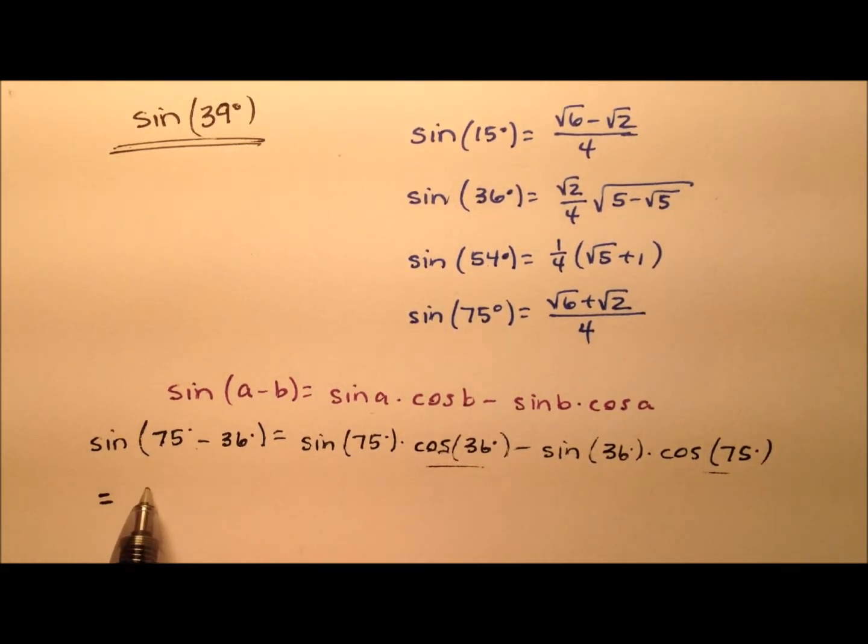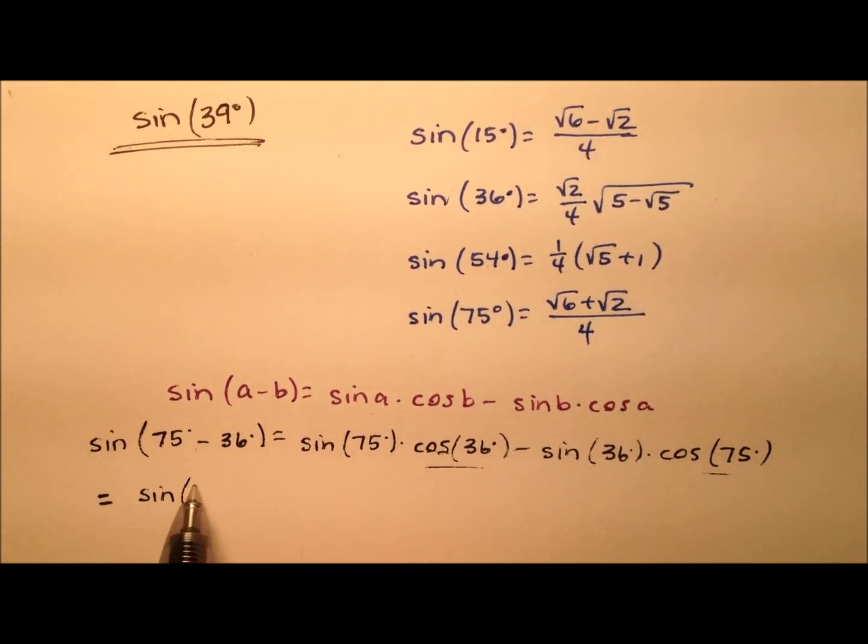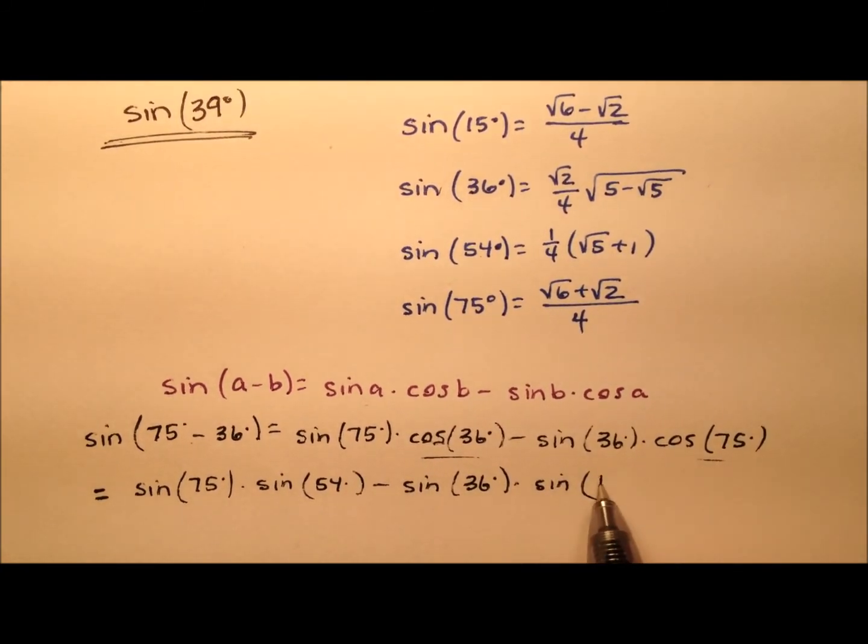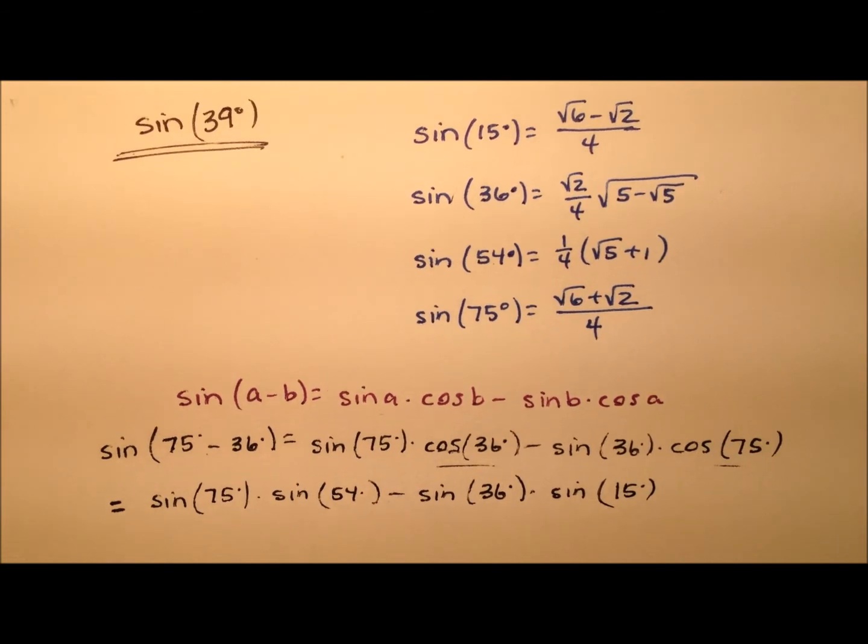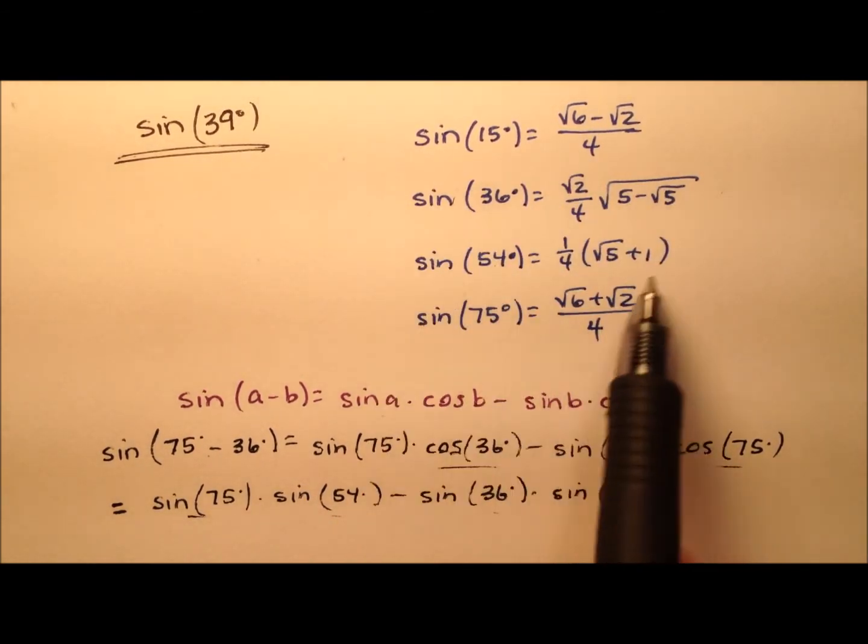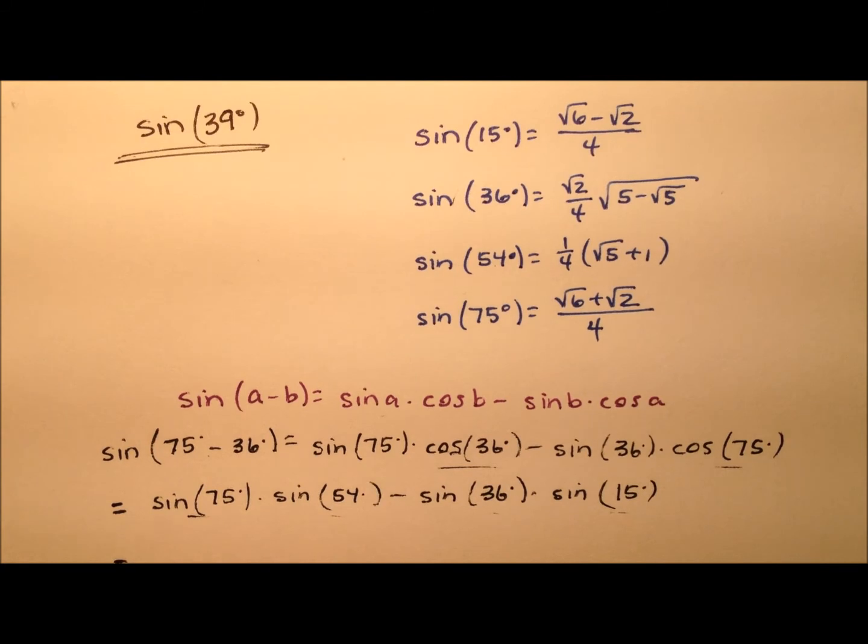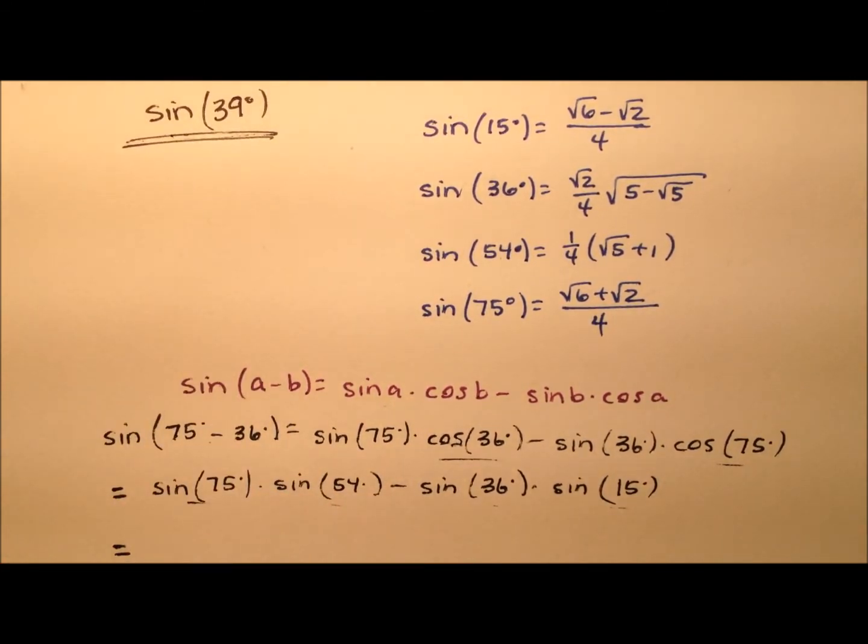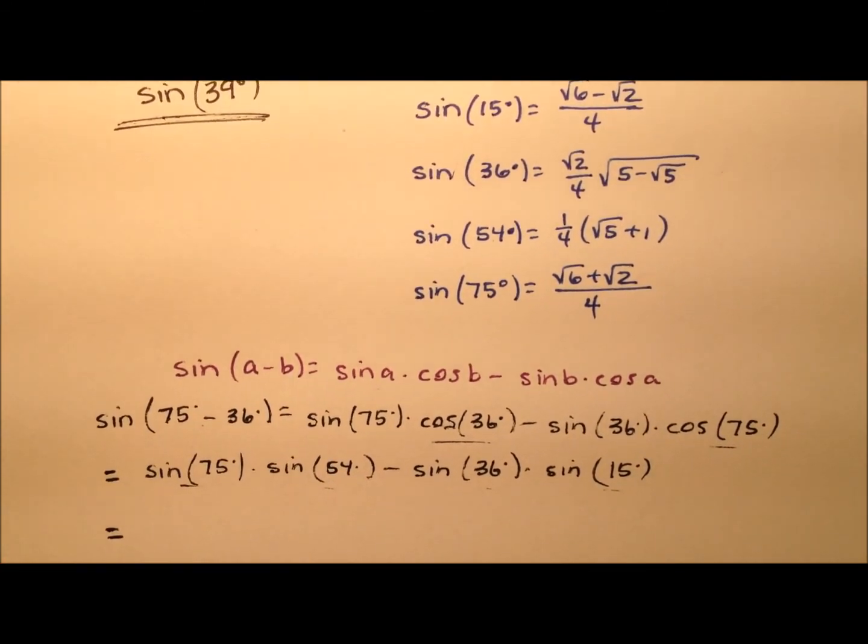So I can rewrite this expression in all sines as the sine of 75 times the sine of the complement here, which is going to be 54 degrees, minus the sine of 36 degrees times the sine of the complement of 75 degrees, which will be 15 degrees. So you'll see all four of these sine values are right up here. We're going to go ahead and put them all together, multiply and simplify as much as we can, and then we'll go through and use a calculator to make sure that what we have is the sine of 39 degrees.